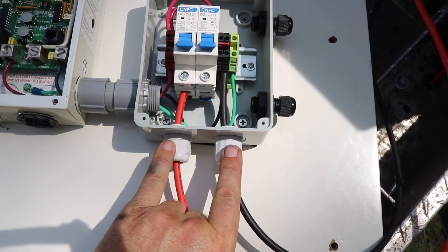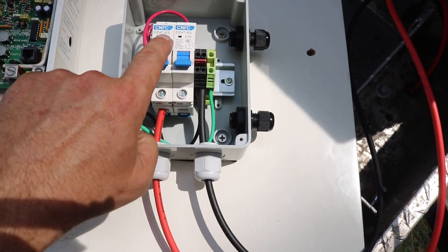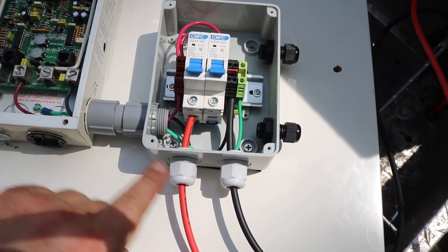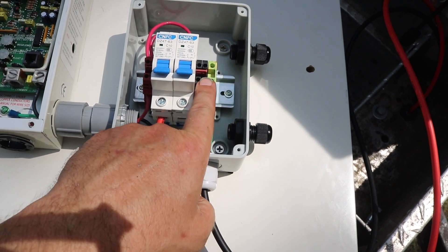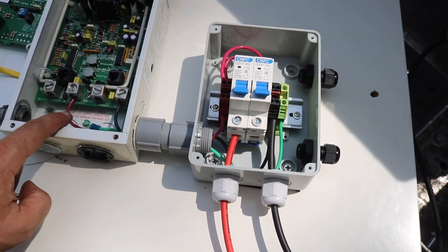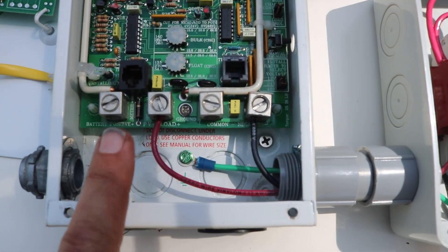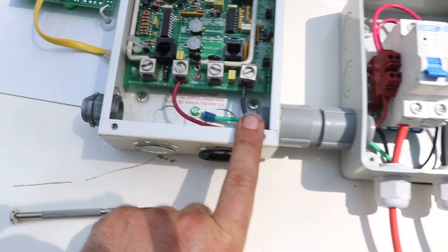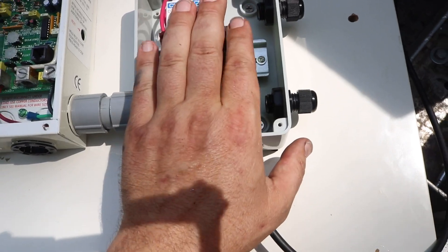Okay, we got our positive and negative coming in. Positive through the breaker and out, negative just goes to a little combiner and out. Over here we got our positive and negative solar charge controller and I think we can put the cover on here now.